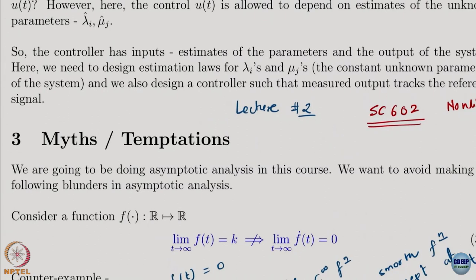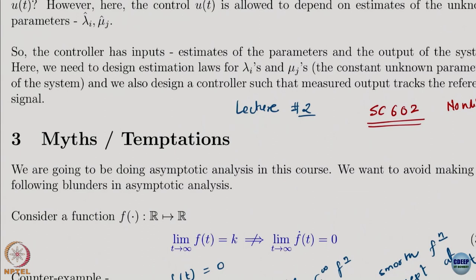The first thing we look at is a few myths that a lot of us carry when we do asymptotic analysis. If I tell you there is a real-valued function and that function converges to a constant, this does not necessarily imply that the derivative converges to 0. A lot of us think: the function is converging to a constant, so the derivative should converge to 0 — but that is wrong.